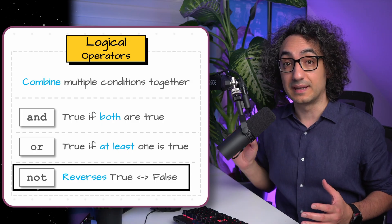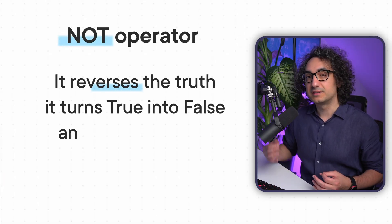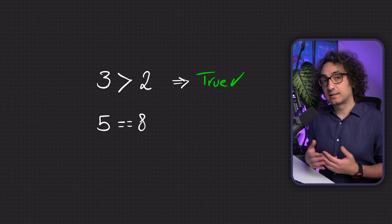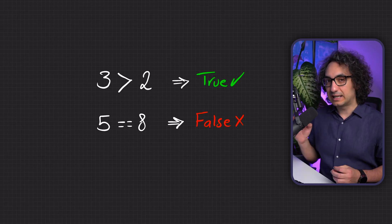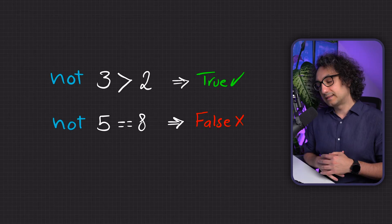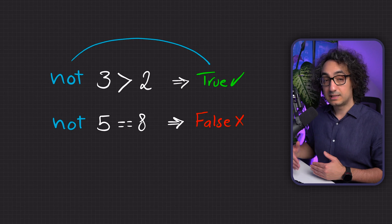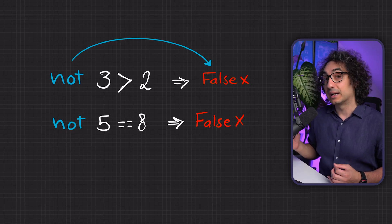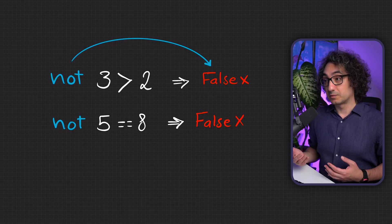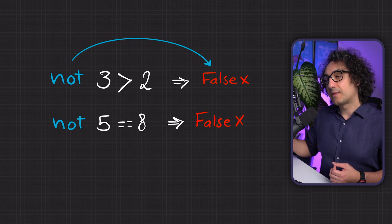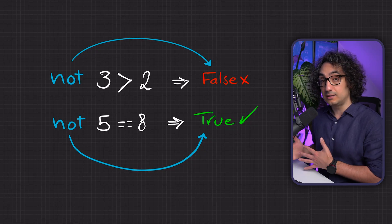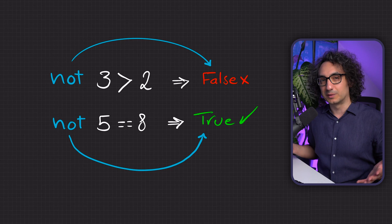Now we have a third logical operator: 'not'. It doesn't combine conditions — it flips the truth value. It switches true to false and false to true. For example, checking if three is bigger than two returns true. Adding 'not' before it flips it to false — now we're asking 'is three NOT greater than two?' Similarly, 'not (5 == 8)' returns true, because five is indeed not equal to eight.